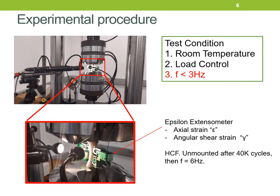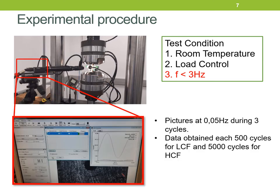The biaxial extensometer was coupled to the specimen during all tests. For low cycle fatigue tests, it was used throughout; for high cycle fatigue tests, it was mounted after the first 40,000 cycles, then the frequency was increased up to 6 Hz to finish quicker. Pictures were taken at 0.05 Hz during 3 cycles. The test was stopped each 500 cycles for low cycle fatigue and 5,000 cycles for high cycle fatigue. The crack tip position is checked by increasing magnification and comparing the maximum load picture with the previous step.